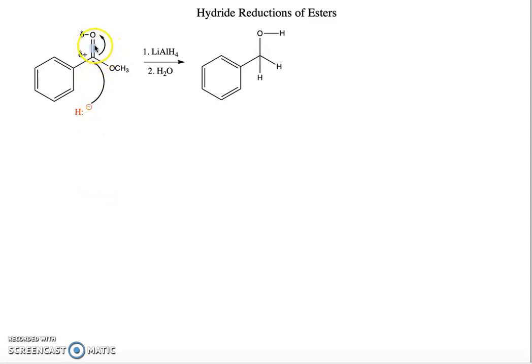The electrons in the double bond of the oxygen move up onto the oxygen because if it did not do that, we would have five bonds to carbon, which we don't want to do. If we look at the product of this attack by the hydride, we get this anion with a negative charge on the oxygen.